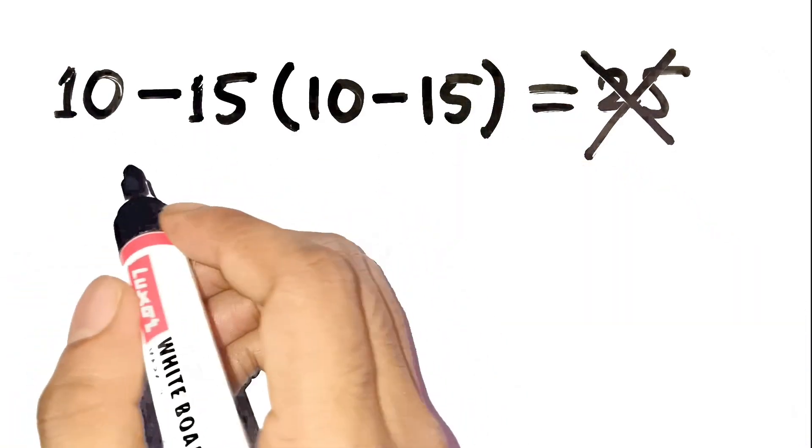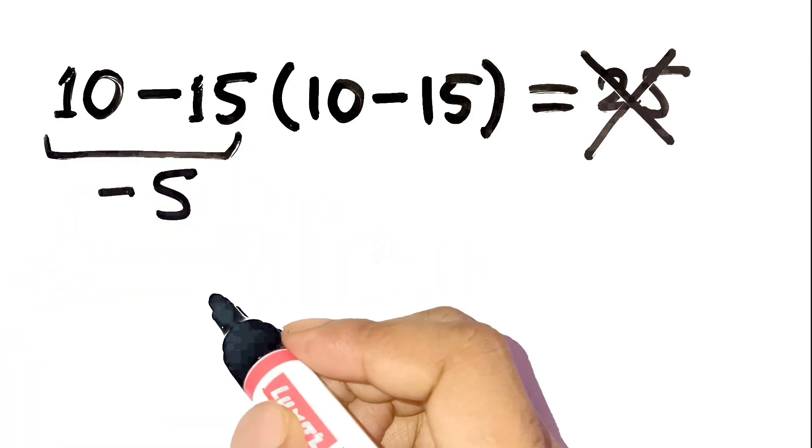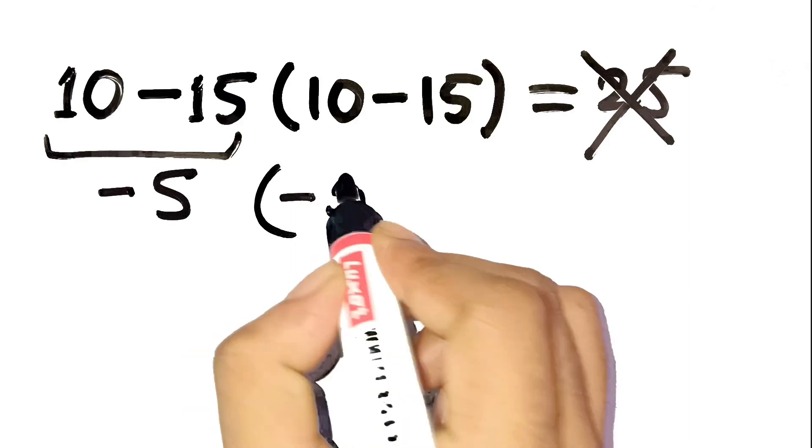I can already hear your thought process. 10 minus 15 is negative 5, right? And inside the parentheses, 10 minus 15 is also negative 5.